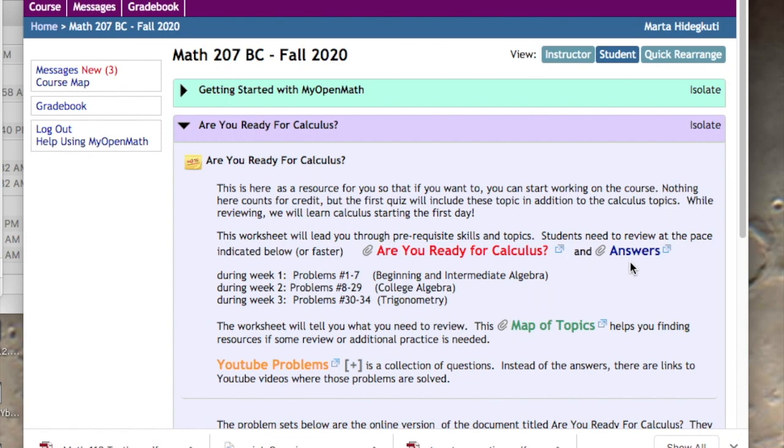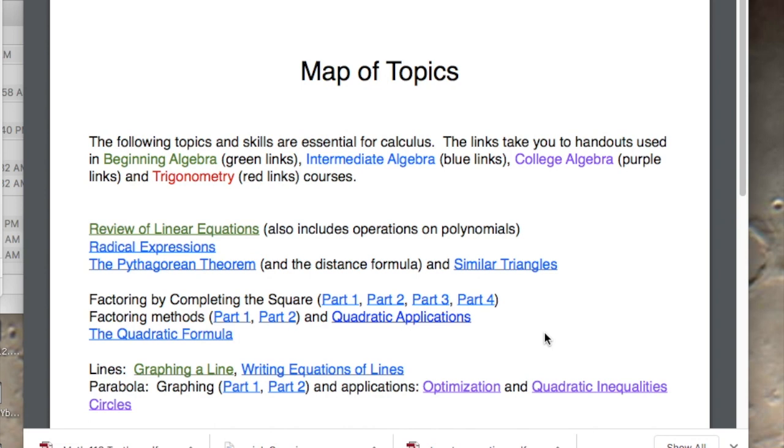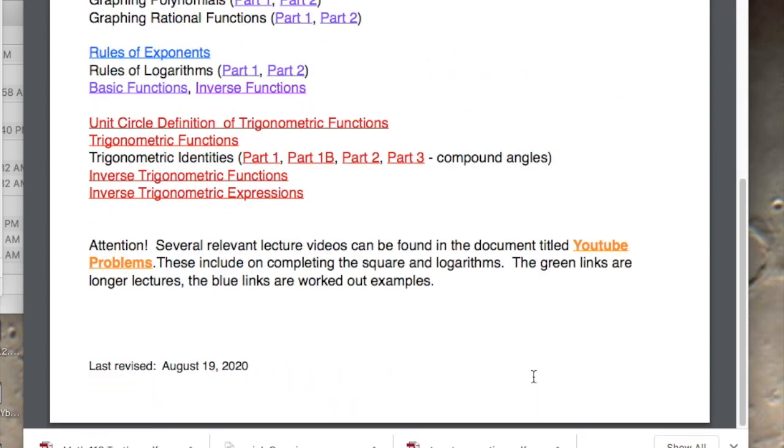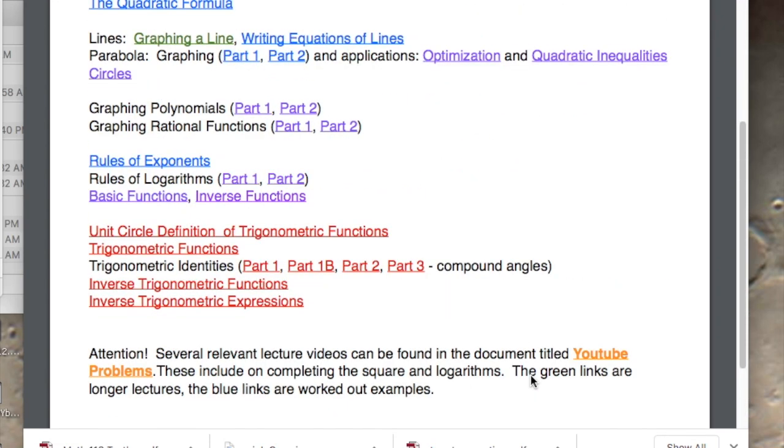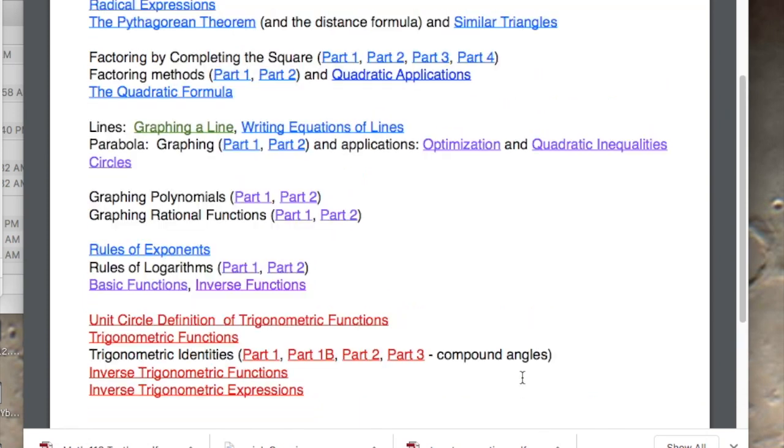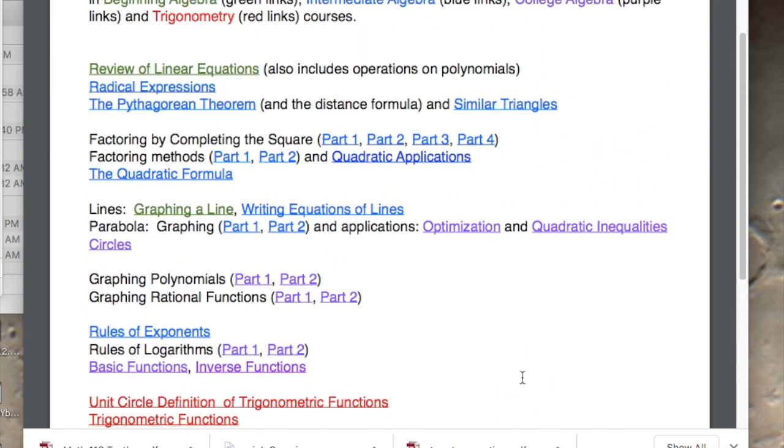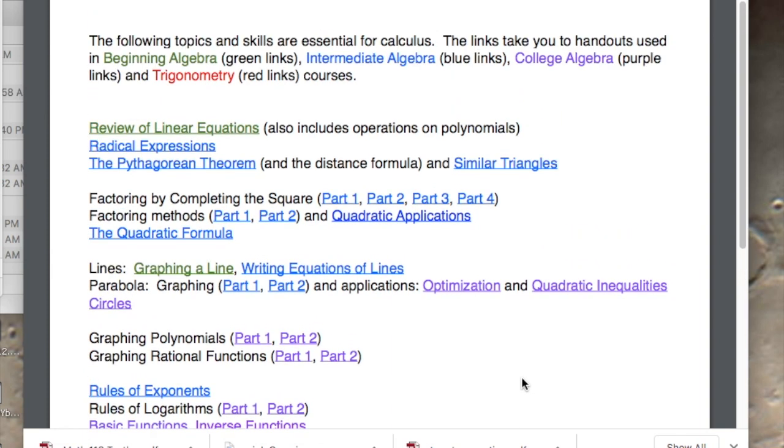So what to do if you get in trouble with some material? For that, that is the second document on MyOpenMath. If you go to this document titled Map of Topics, it is basically just a collection of links towards the most important topics within these prerequisite courses. And they are color-coded. The links in red are Trigonometry topics, the purple are college algebra, the blue are intermediate algebra, and the green ones are beginning algebra.